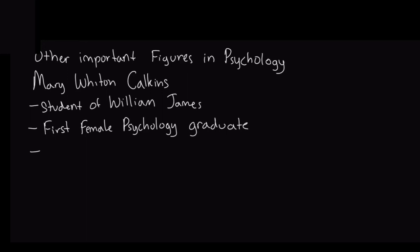Other important figures in psychology, starting with Mary Whiton Calkins. She was a student of William James and the first female psychology graduate, but she was denied her PhD because of her gender. However, she went on to become the first female president of the American Psychological Association, or APA.